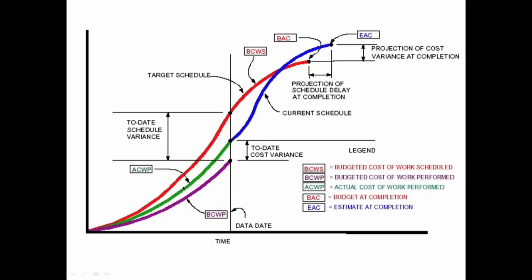In this comprehensive graph: green is the actual cost of work performed (ACWP), the red graph is the budgeted cost of work scheduled (BCWS), and budgeted cost of work performed is the earned value (BCWP). At the monitoring time, we obtained the earned value and ACWP, and had already had BCWS, enabling us to calculate the variances.